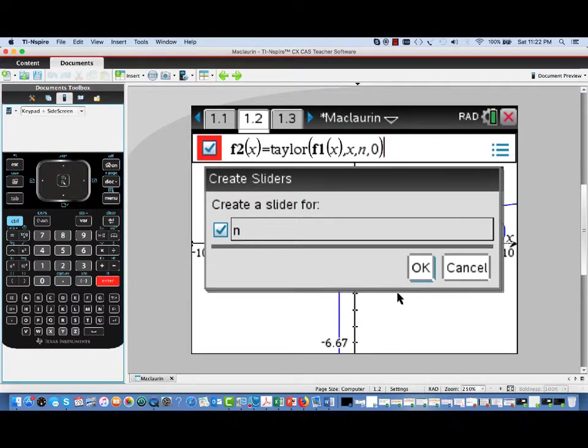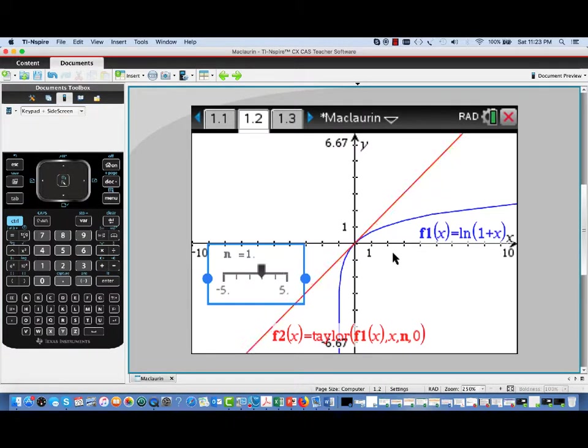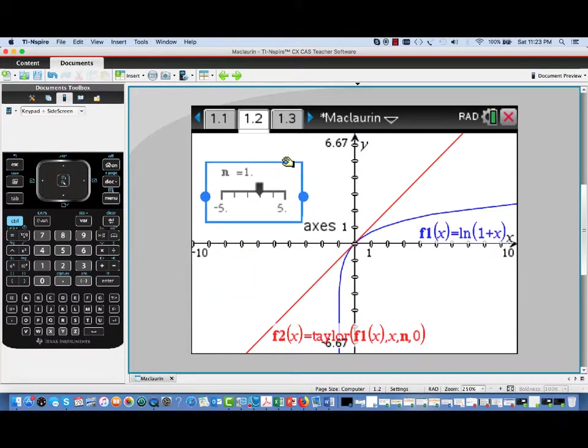Now, as soon as I enter that, it detects the n and says, would you like to create a slider for that? We'll say yes. And then we automatically have a slider set up for n. I'll move that up here out of the way.